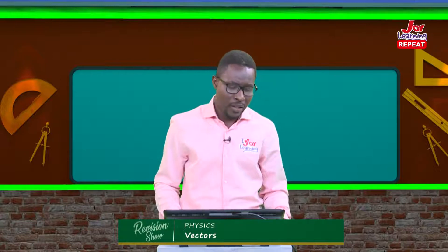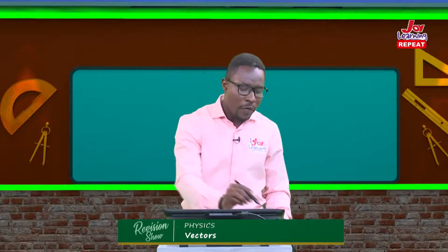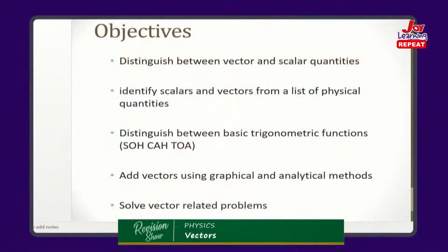Vectors — what are vectors? Before we go to what vectors are, by the end of this lesson I would want you to note the following objectives. By the end of this section, each and every one of you should be able to distinguish between what a vector quantity and a scalar quantity is. You should be able to tell me the difference between a vector quantity and a scalar quantity. You should also be able to identify vectors from a list of physical quantities — that is, tell me which ones are vectors and which ones are scalars.